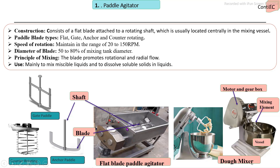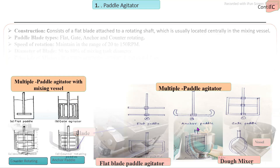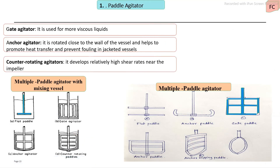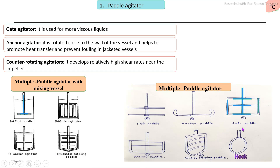The blade of the paddle agitator is attached to the rotating shaft, mostly located at the center of the mixing vessel. Paddle type mixing elements are available in a number of designs. The mixing element diameter is 50 to 80% of the tank diameter, with a rotation speed of 20 to 150 RPM. Designs include: flat paddle, gate type, anchor type, and counter-rotating paddle — as well as anchor-whipping type variants — selected based on required shearing force.